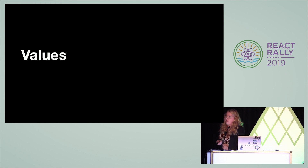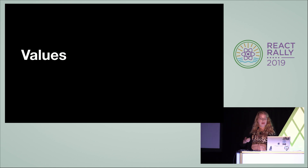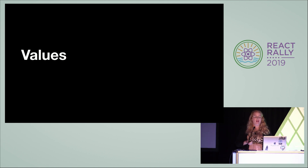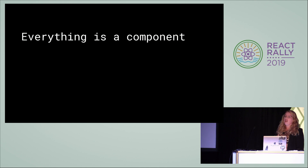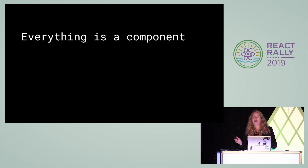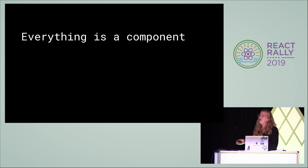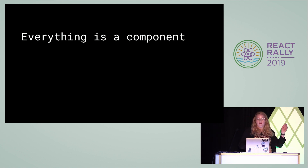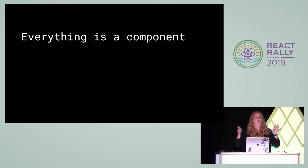I wanted to talk a little bit about values. We actually got together as a team at the very beginning of this project to write down our principles and values, and they served as a North Star while designing the API for Primer Components. I really highly recommend this — I had no idea how useful it would be until I was in the dirt building these components. The first thing is that everything is a component. Coming from a culture of Rails where there's a huge view file and everything's in there, I see a lot of people moving to React and trying to build a whole page in one component. We really wanted to focus on core UI components — base components that can be composed to build bigger pieces of UI.